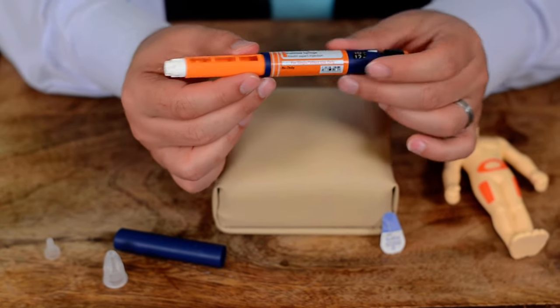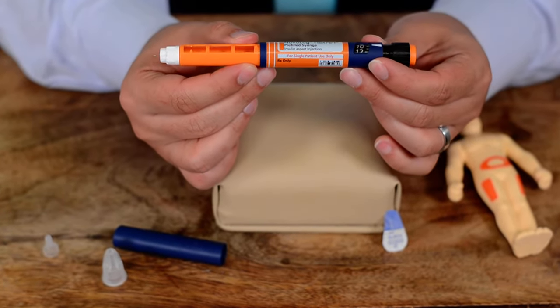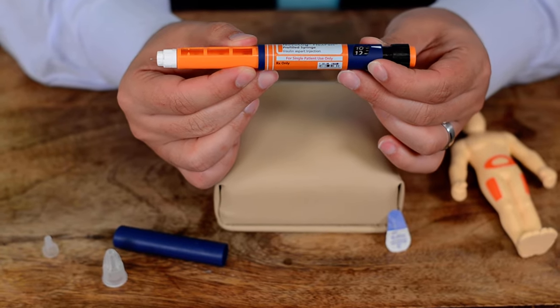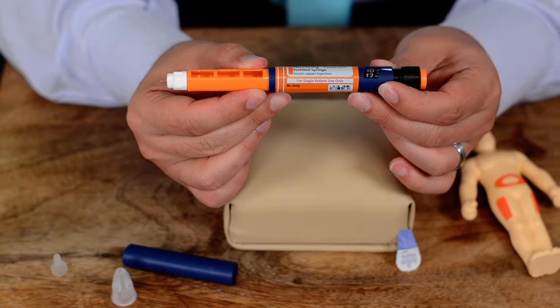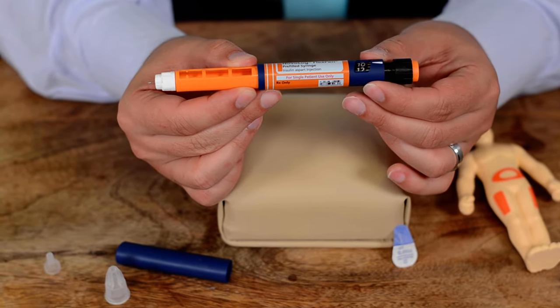Let's say you are going to take 10 units. Remember Novolog is an insulin that you take before meals or occasionally with a sliding scale when your blood sugars are high.